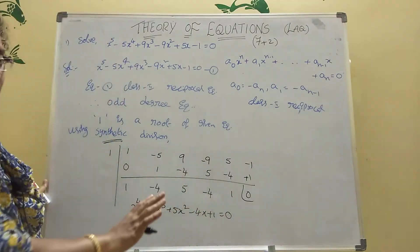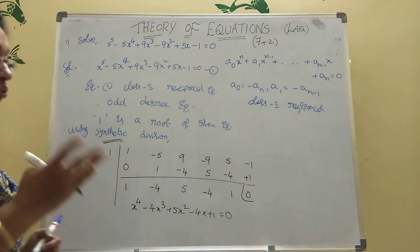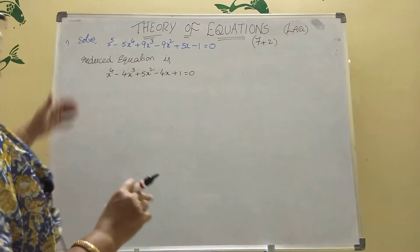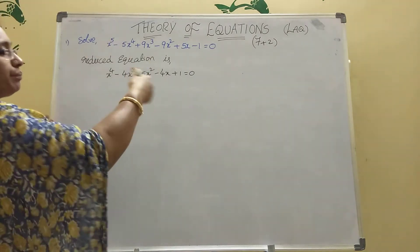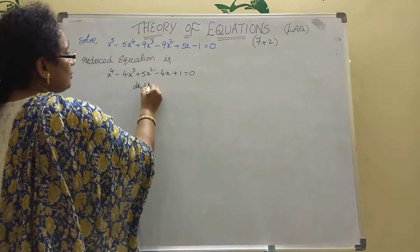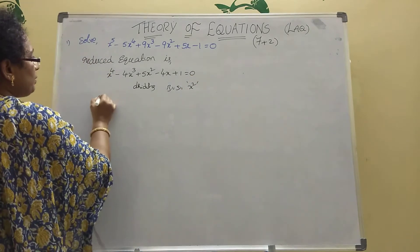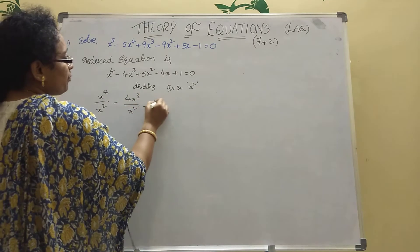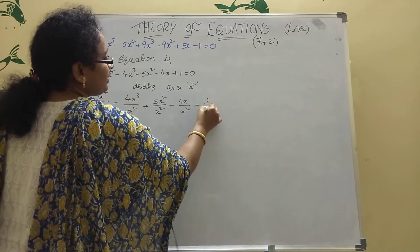Again here what comes is a Class 1 equation. That is why dividing both sides by x^2. So: x^4/x^2 - 4x^3/x^2 + 5x^2/x^2 - 4x/x^2 + 1/x^2 = 0. We are dividing each term by x^2.